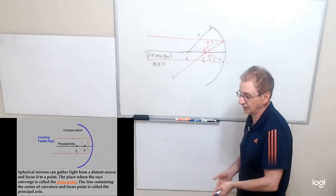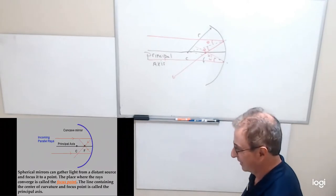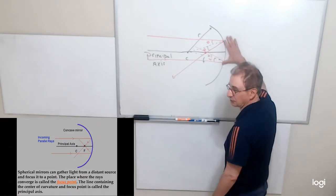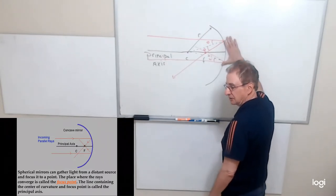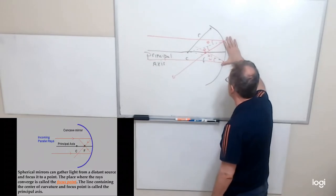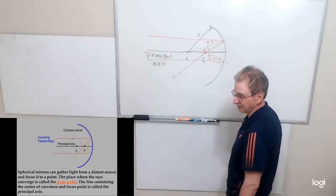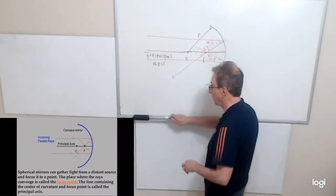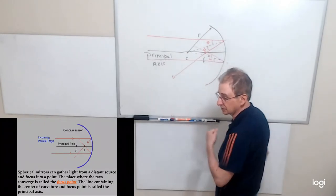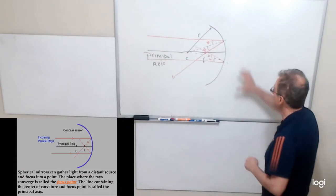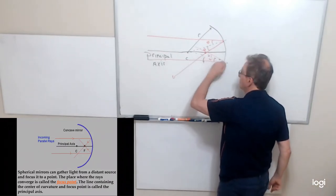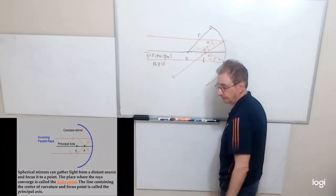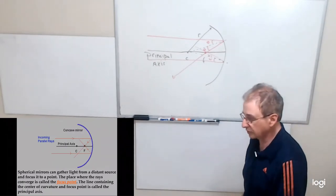I have to be truthful: in order for these rays to really go through the focus point, they have to be close to the principal axis. As you go further and further away from the principal axis, they actually won't go through the focus point. But as long as you're close to the principal axis, the rays that come in parallel and are close to it, when they get reflected, will go through the focus point.